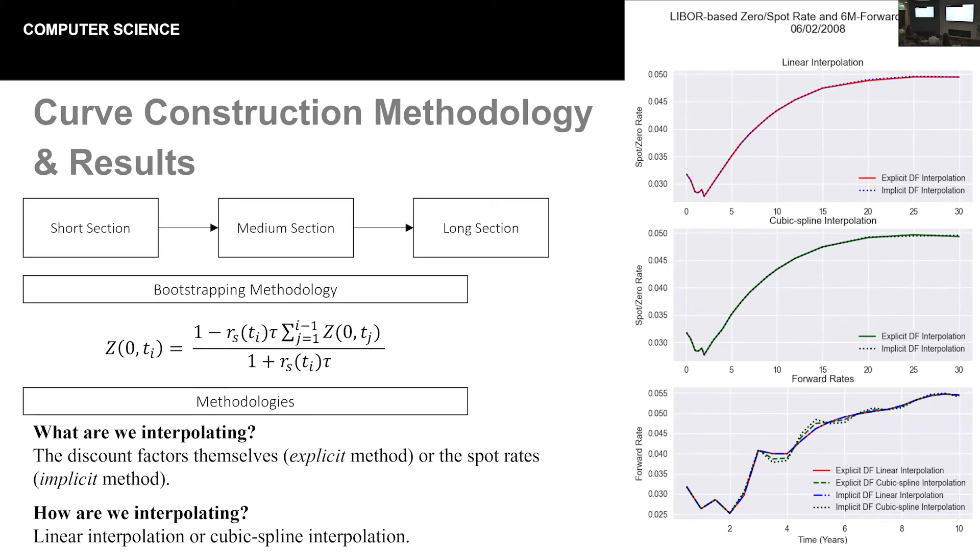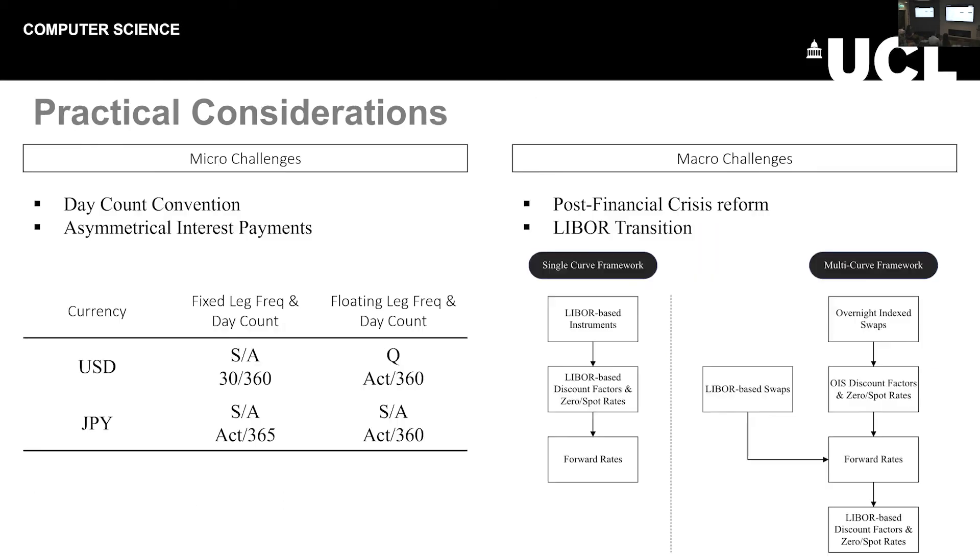Unfortunately, in the real world, you might use something like an optimization technique. But as this project was not focused on curve construction, we elected to end things there. There are a number of practical considerations that we need to consider. First of all, being day count convention. Throughout this project so far, we've assumed that tau, our time between interest rate payments, is constant. But the day count convention may not allow that. In addition, we've assumed that our fixed rate payments and our floating rate payments occur simultaneously. And again, as the table on the screen illustrates, that may not be the case. So these are certainly added complications.